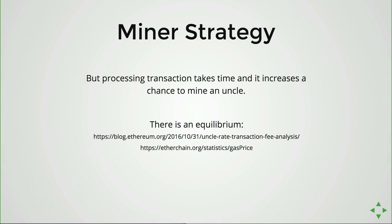But ordering by fee is not enough. Even though including transactions earns money, the chance of mining an uncle block also increases. An uncle is a block that doesn't make it onto the canonical chain, so you don't get a full reward. There is an equilibrium: it defines how many transactions you should include, or what the minimum fee should be, for you to actually maximize earnings rather than lose money.